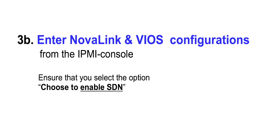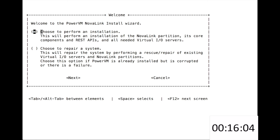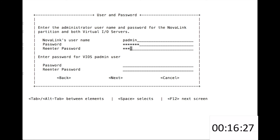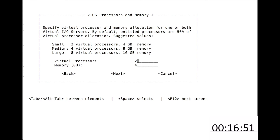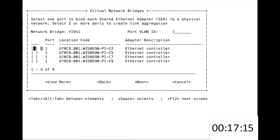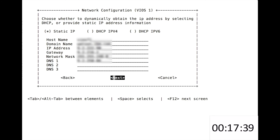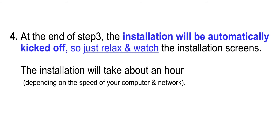Step 3b: enter the NovaLink and VIOS configuration details from the IPMI console. Ensure that you select the option titled 'choose to enable SDN.' At the end of step 3, the installation will be automatically kicked off, so just relax and watch the installation screens.